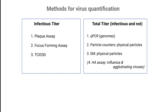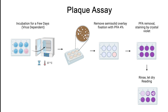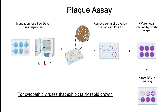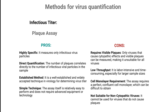Let's now explore the techniques used to determine both infectious and total virus titers. The plaque assay is a method where viral infection causes visible damage to the cells and forms plaques, allowing for the quantification of infectious viral particles. This assay is ideal for cytopathic viruses that exhibit fairly rapid growth, such as Vaccinia virus and Herpes simplex virus 1. While the plaque assay is inexpensive and easy to perform, it requires the virus to cause visible plaques, which isn't the case for all viruses.